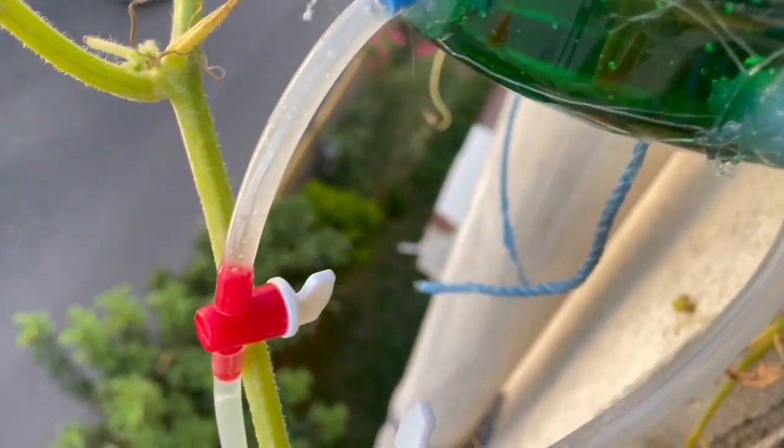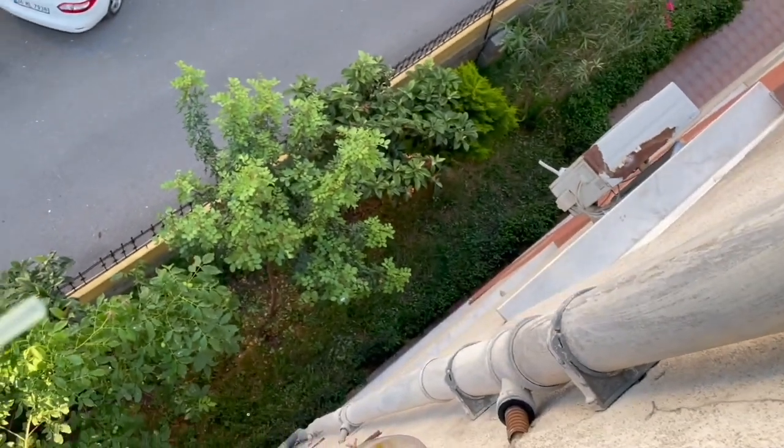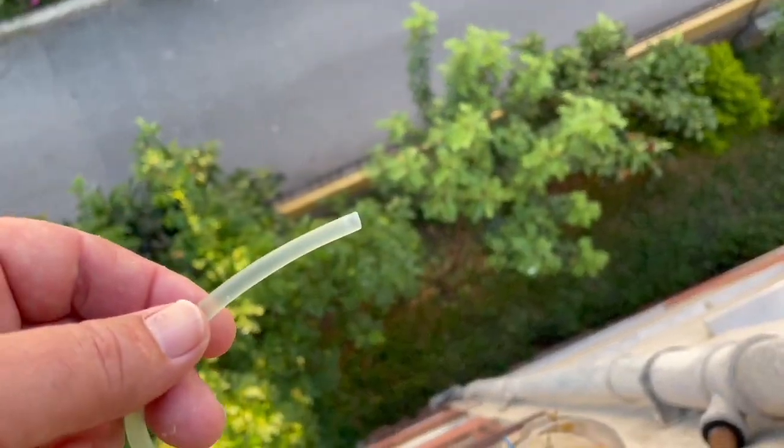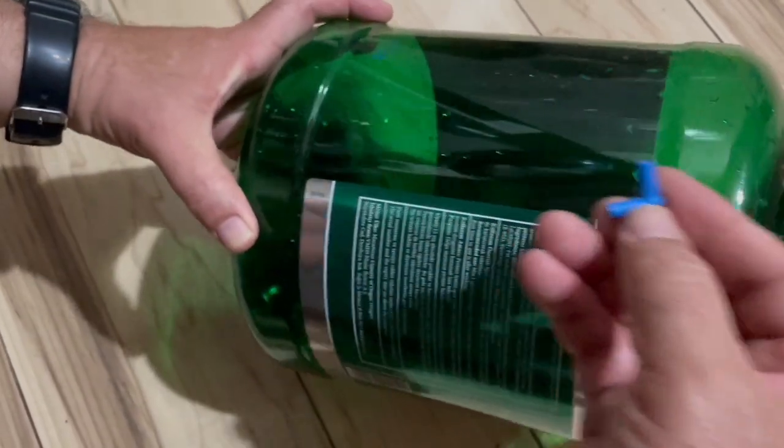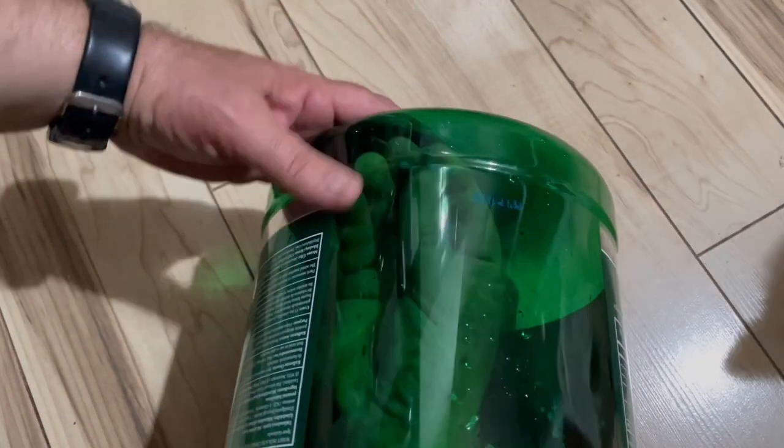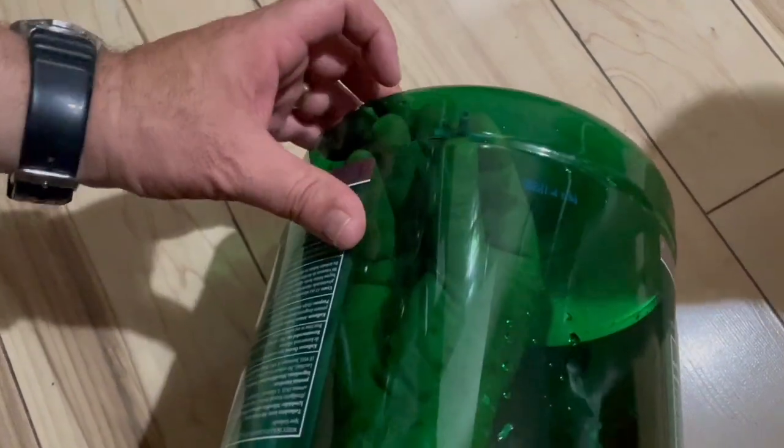Before moving on to the simple techniques, let's start with the technique that provides a very difficult controlled irrigation. We need to drill a hole and fix the plastic part that you have seen in this hand to the bottom side of a hard pet bottle.